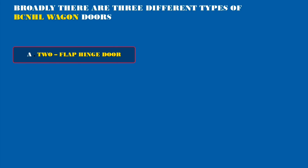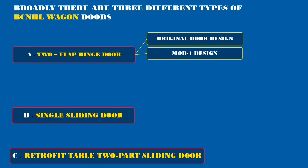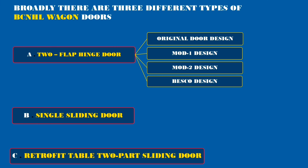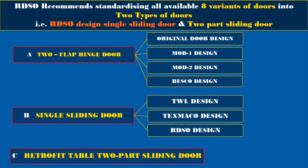There are 3 different types of BCN HL Wagon Doors: A. Two Flap Hinged Door, B. Single Sliding Door, and C. Retrofit Table 2 Path Sliding Door. These doors are classified further — the 2 Flap Hinged Door into 4 types: Original Door Design, Modification 1 Design, Modification 2 Design, and Besko Design. The Single Sliding Door is classified into 3 types: TWL Design, TexMacho Design, and RDSO Design.